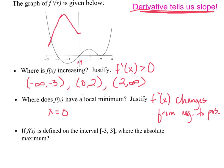So, it's going to increase all the way to two, level out for a second, and increase again. Judging by this picture, I think we can say that the absolute maximum occurs at the right endpoint, x equals three.